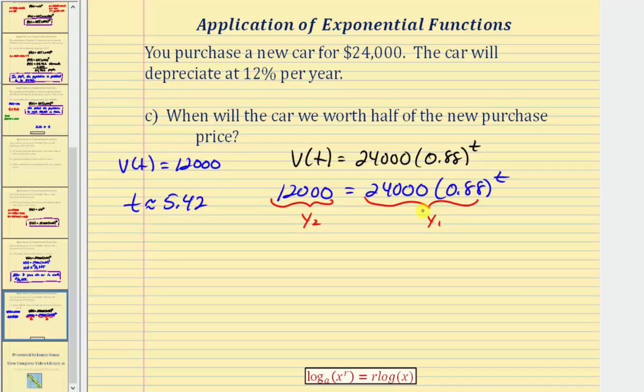Now let's also solve this using logarithms. So we isolate the exponential part of the equation first by dividing both sides by 24,000. Simplifying, notice how the left side is going to be one-half or 0.5 equals 0.88 raised to the power of t.